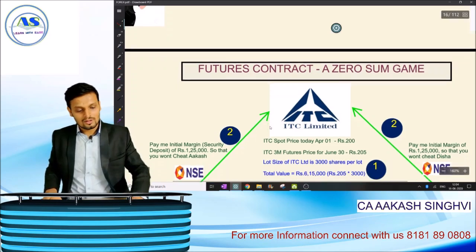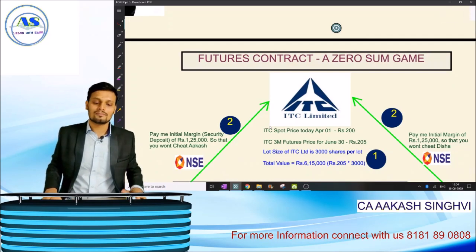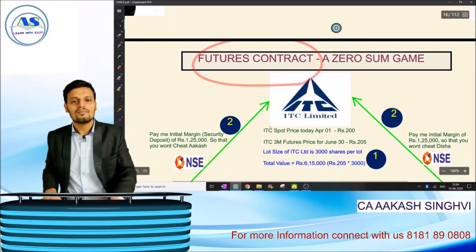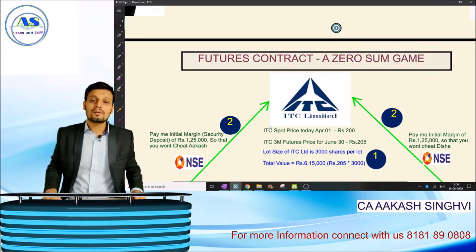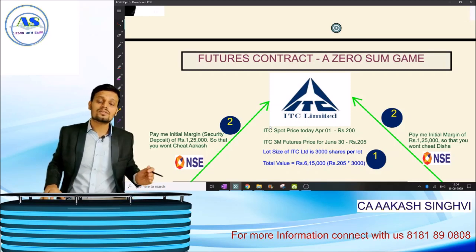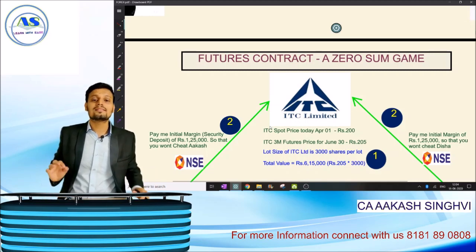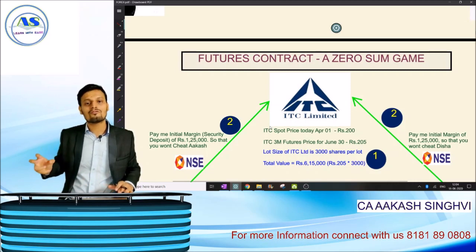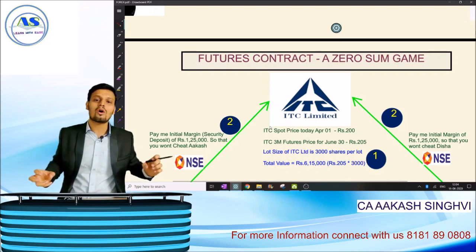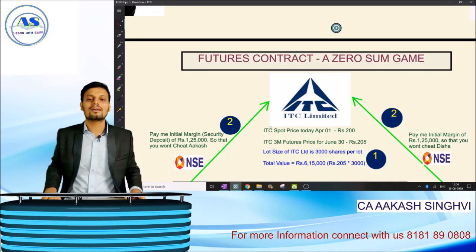I have taken one example of a futures contract, which is a zero-sum game. What is a zero-sum game? Zero-sum game means at the end of the contract, if one person is earning a profit, the same amount of loss will be incurred by another person. So at the end of the day, the profits of one person will be equal to the loss of another person.